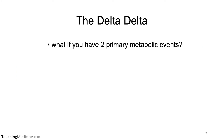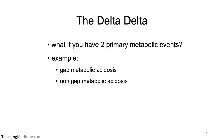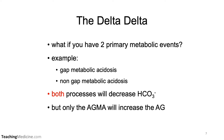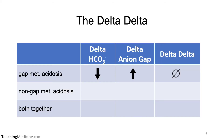What if there were two primary metabolic events? It is possible to have an anion gap metabolic acidosis and a non-anion gap metabolic acidosis at the same time. Both processes will decrease the bicarb, but only the anion gap metabolic acidosis will increase the anion gap. With a non-anion gap metabolic acidosis, the bicarb goes down but the anion gap does not change, so the delta-delta is a negative value. Together, the bicarb is going to go down really far and the anion gap is only going to go up a little bit, so the delta-delta remains negative — the bicarb will be lower than expected.